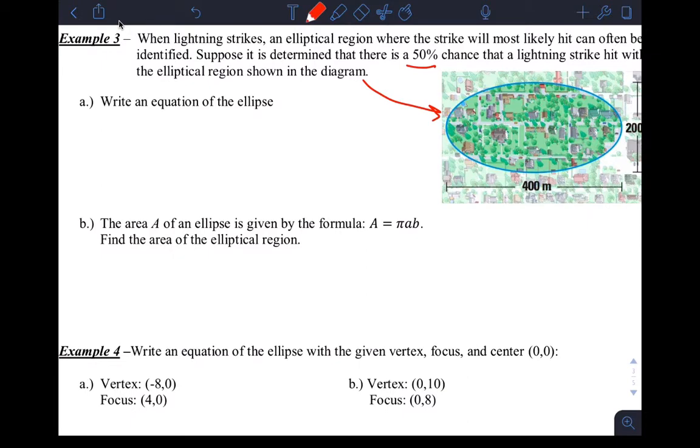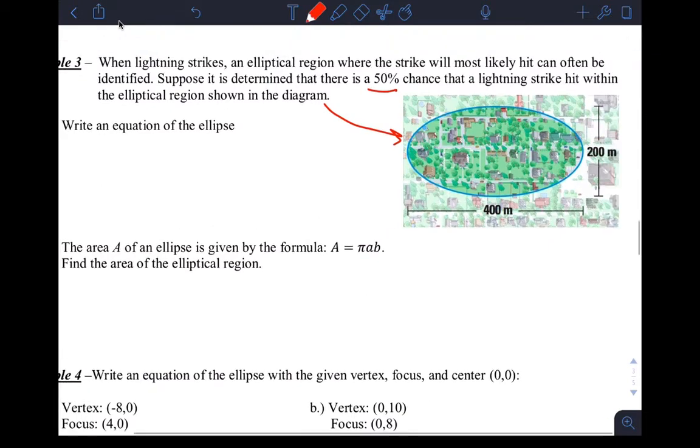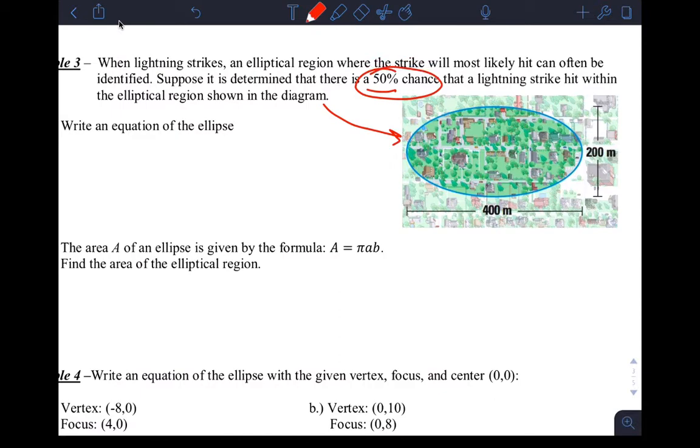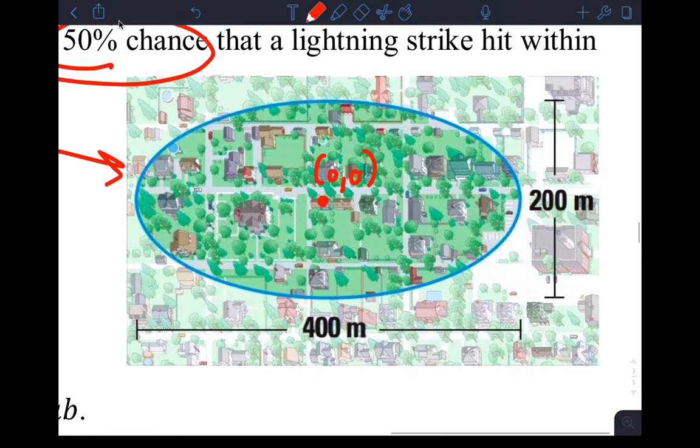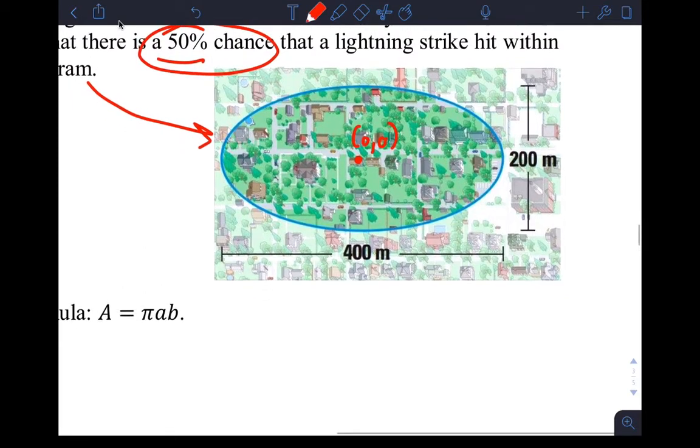Write an equation of the ellipse. I'm not sure what this 50% chance has to do with anything. They're basically just saying, use the diagram to write the equation of an ellipse. And so let's focus on the diagram. Basically, what you can do is say, let's make the center here 0, 0. Since the formulas we have for the equation of ellipse...